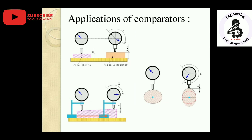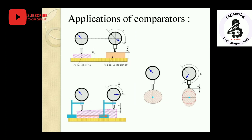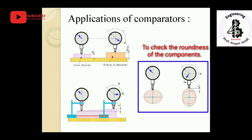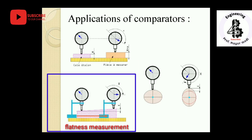They are also used for checking parts received from outside sources. Specific measurement applications include: measuring the height of components against a standard to get the same indication; checking roundness by placing 12 to 36 points on the periphery of the job and recording indications at each position; dividing the face into equal parts and taking readings; and measuring flatness. Many types of measurements can be made using comparators.